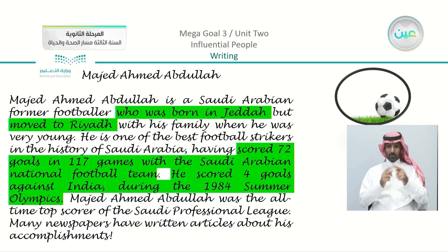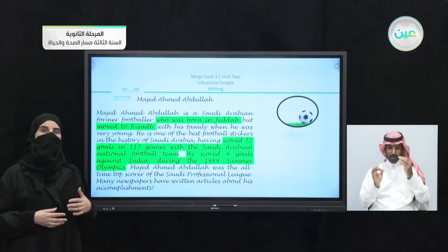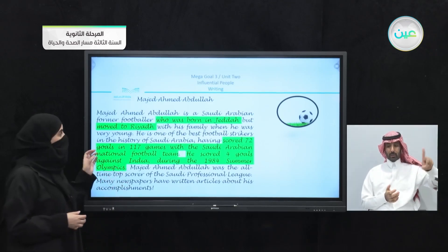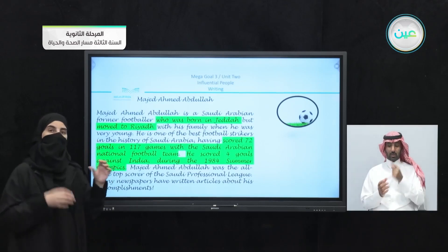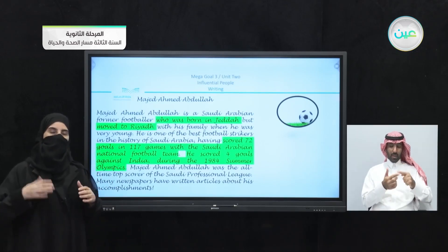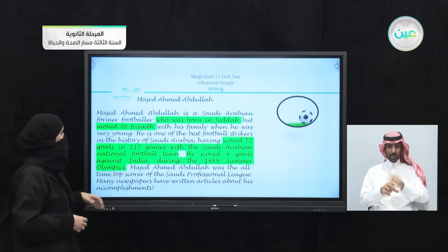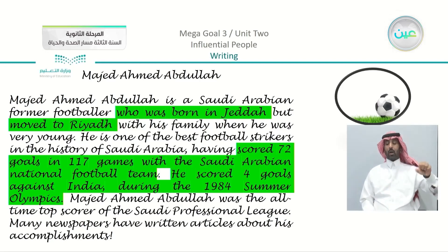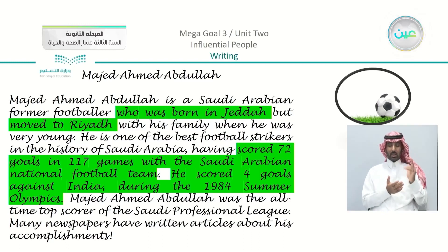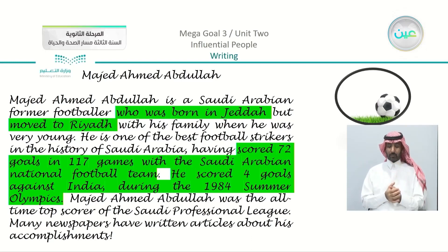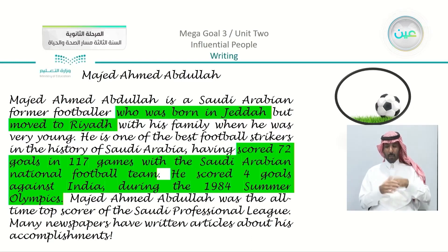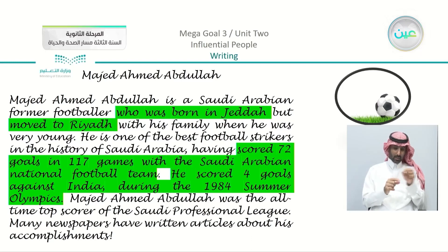Here I have the paragraph mentioned in the book. You can see the complete paragraph about Majid Abdullah. I highlighted in green the sentences or parts of sentences that are in order. Majid Ahmed Abdullah is a Saudi Arabian former footballer who was born in Jeddah but moved to Riyadh with his family. He scored 72 goals in 117 games with the Saudi Arabian national football team. After that, he scored four goals against India during the 1984 Summer Olympics. You can see four main highlighted points that happened in order.